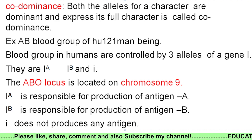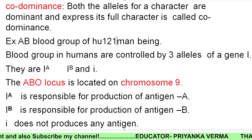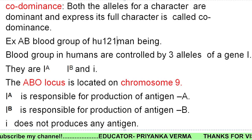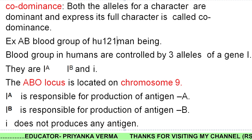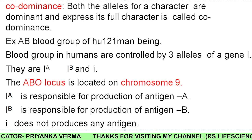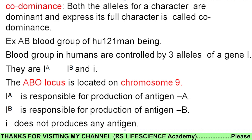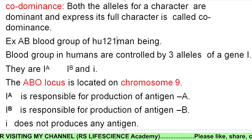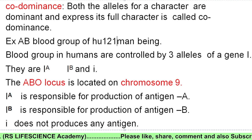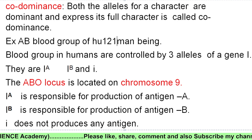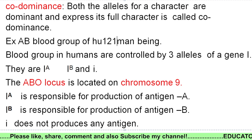Co-dominance means — it is clear from the name — some of the two things are dominant. There are two members in it. Both are dominant. Both have equal rights. Each allele is not suppressed by the other; the other cannot mask its function. Both alleles for a character are dominant and express their full character — that is called co-dominance.